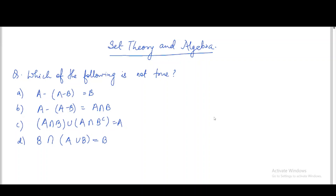Let us see some problems based on set theory. The question is: which of the following is not true? The options are: (a) A minus (A minus B) equals B, (b) A minus (A minus B) equals A intersection B, (c) A intersection B union A intersection B complement equals A, and (d) B intersection (A union B) equals B.